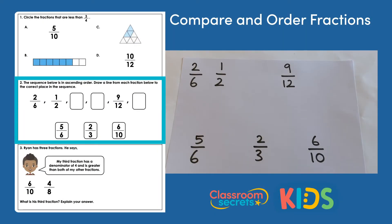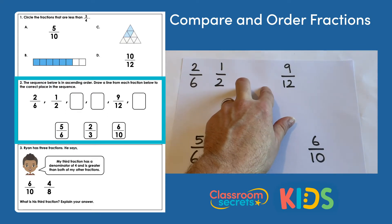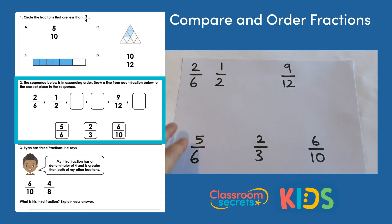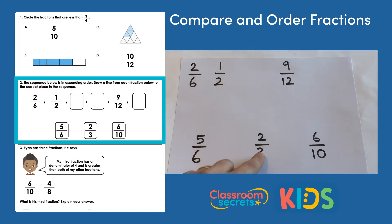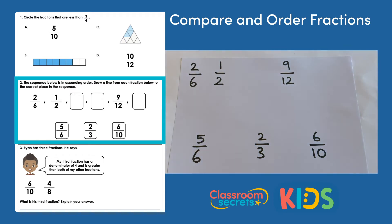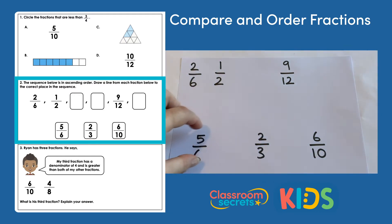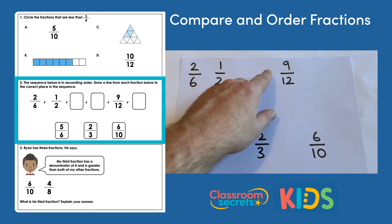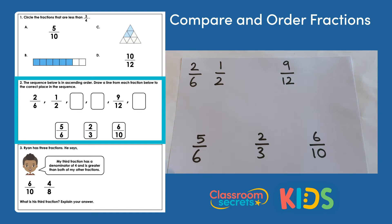Question two says the sequence below is in ascending order. Draw a line from each fraction below to the correct place in the sequence. We have two sixths, one half, two missing fractions, nine twelfths, and another missing fraction. The fractions we have to place are five sixths, two thirds, and six tenths. We can assume these three fractions fill the three missing places, and compare them to confirm the correct order.